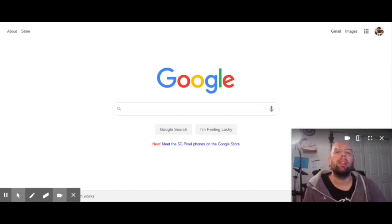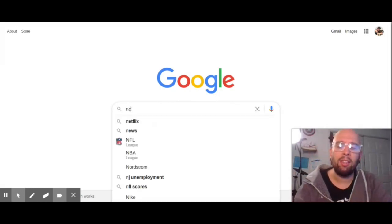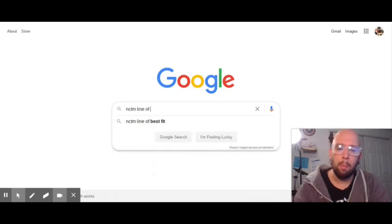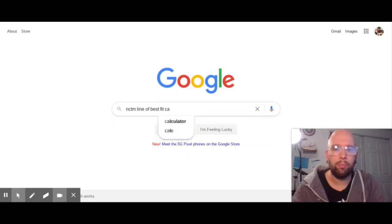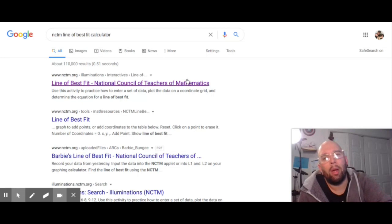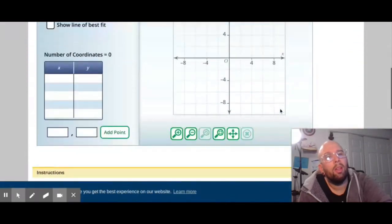The calculator we're going to use is this: go to Google and type out NCTM line of best fit calculator. I'm going to click obviously the first screen and there it is.